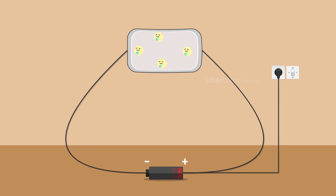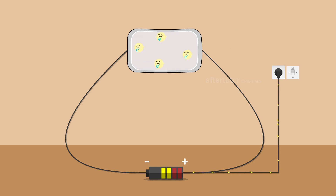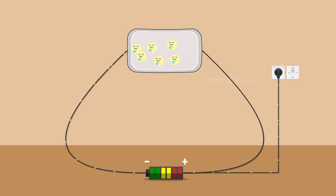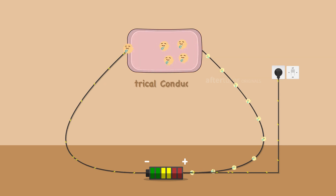A metal is kept in contact with an electric current source. The current is switched on, and the electric current is made to pass through the copper wire to the metal. As metals are good conductors, the current will pass through the metal. Now, the amount of electricity passing through the metal is called electrical conductivity.